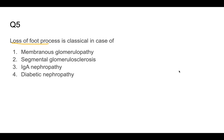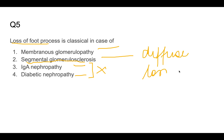Loss of foot processes is classical in which case? In IgA nephropathy and diabetic nephropathy there is no loss of foot processes. In focal segmental glomerulosclerosis there is diffuse loss of foot processes in both sclerotic and non-sclerotic areas — therefore the answer is focal segmental glomerulosclerosis. For this you have to remember the morphology of each glomerulopathy.